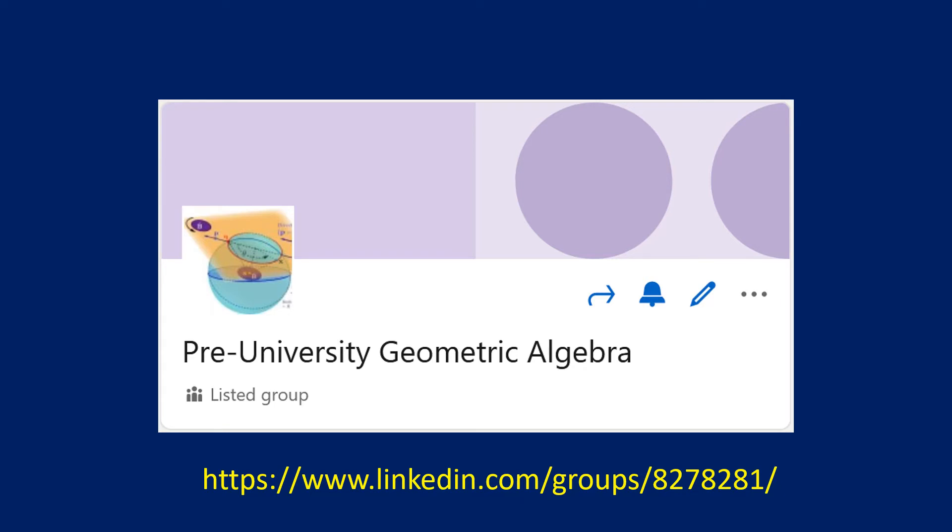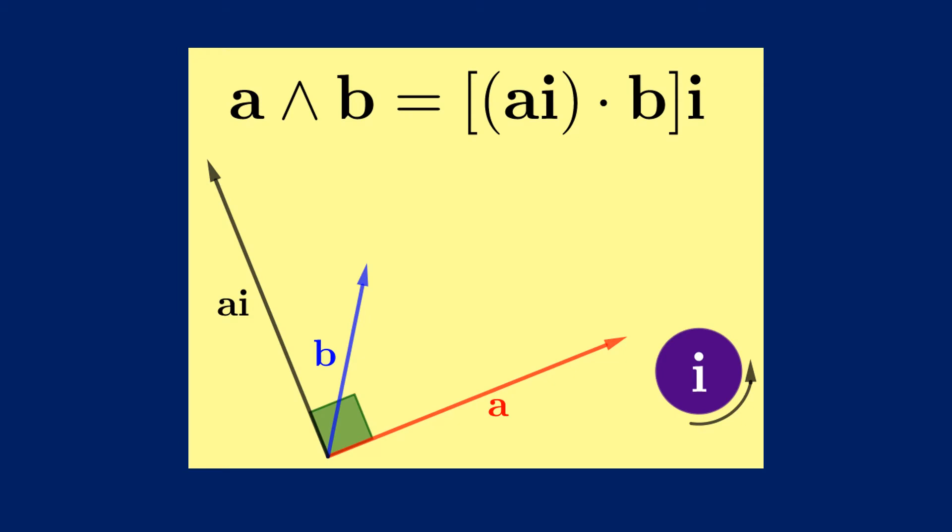Our identity that we want to prove here involves two vectors a and b and the unit bivector of the plane that contains those two vectors, or more properly, the unit bivector that is parallel to both.